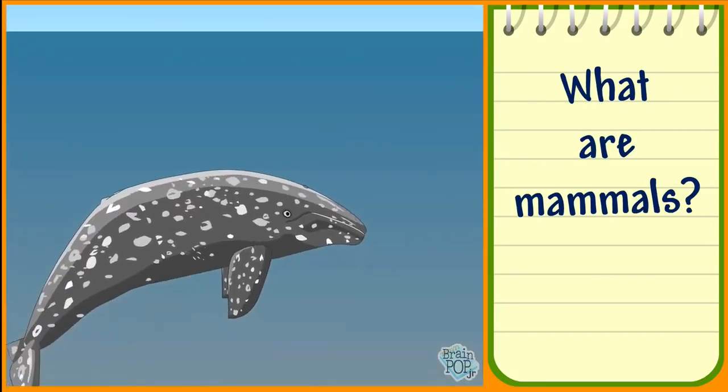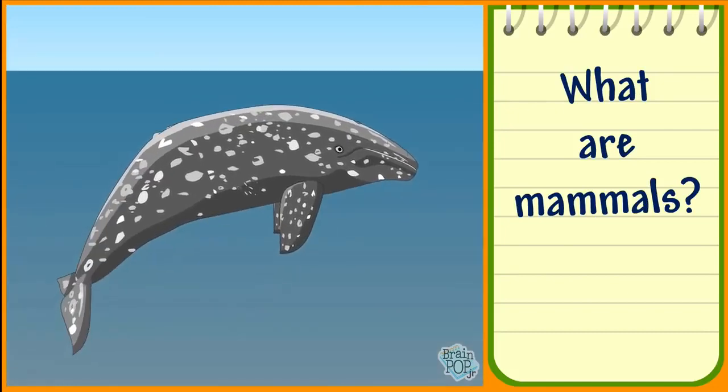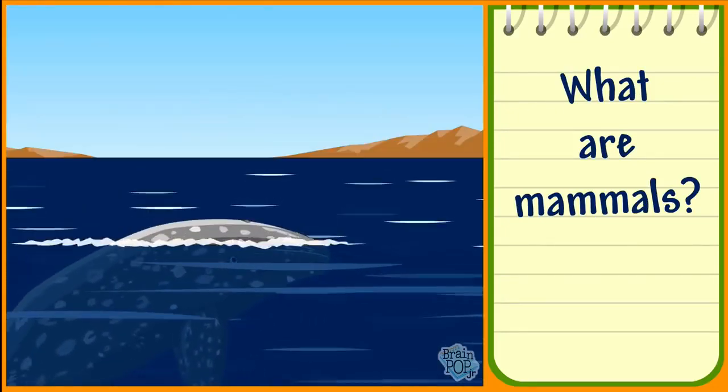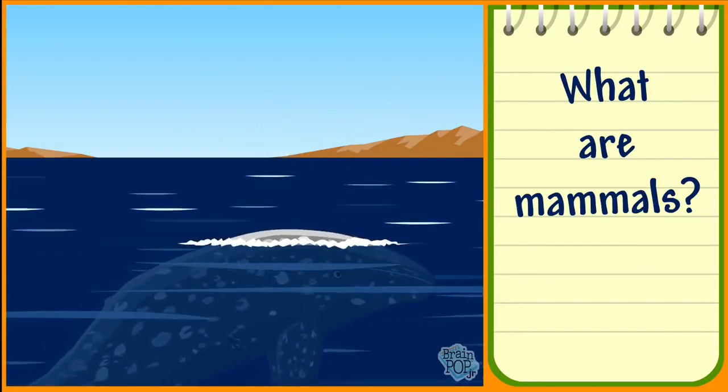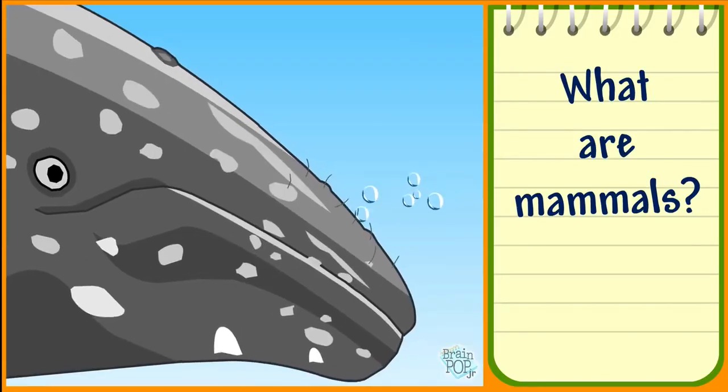Some mammals live in water, like whales. But they still have lungs to breathe oxygen. So they need to come up for air. They even have hair.